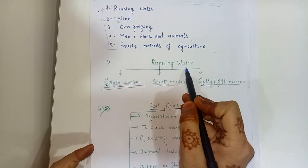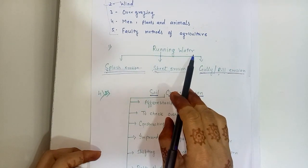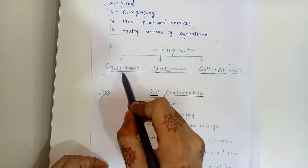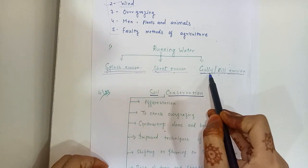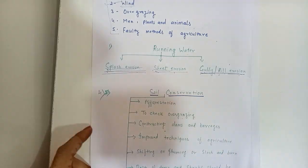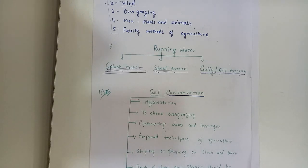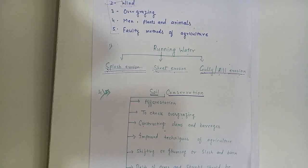First, running water. Running water is responsible for soil erosion and it is divided into three types: splash erosion, sheet erosion, and gully erosion — also called rill erosion. The prime factor of soil erosion is running water. Indirectly, soil erosion helps in soil deposition because whenever soil is removed it is deposited elsewhere. However, it disrupts the agricultural pattern and should be prevented.